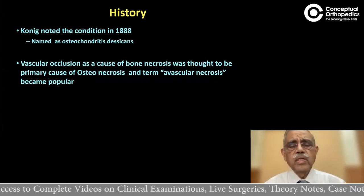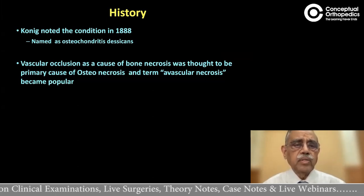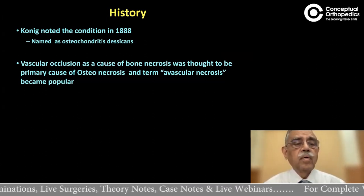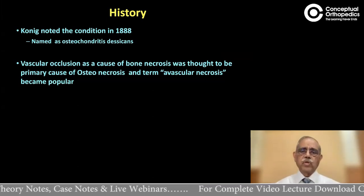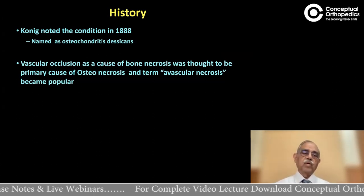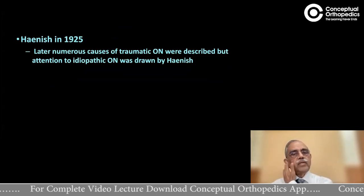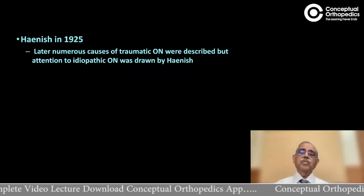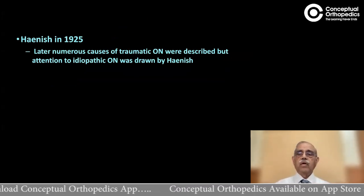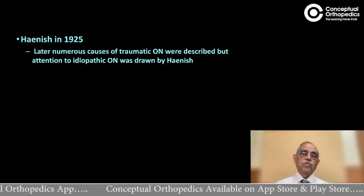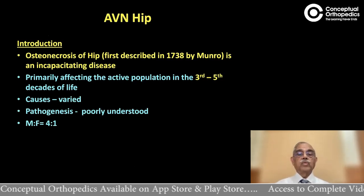It was Koenig who noted this condition way back, nearly about 240 years ago, and named it osteochondritis dissecans. Vascular occlusion as a cause of bone marrow necrosis was thought to be the primary cause of osteonecrosis, and that's why the term avascular necrosis became popular later. It was Hinesh who later enumerated the numerous causes of traumatic osteonecrosis and described both the traumatic and idiopathic causes of osteonecrosis of the head of the femur.